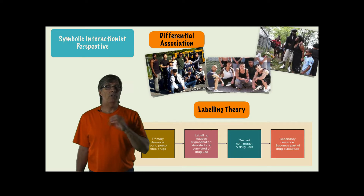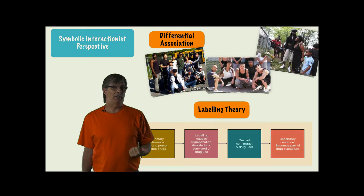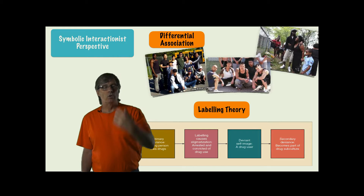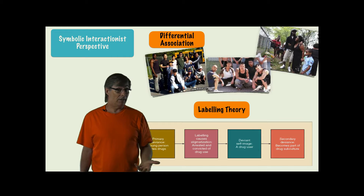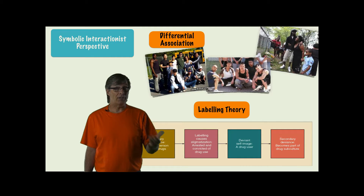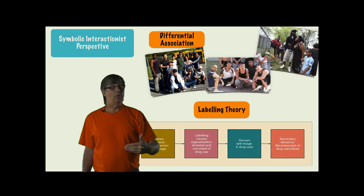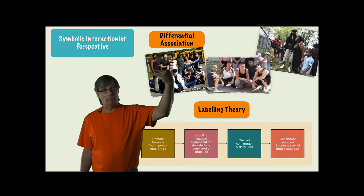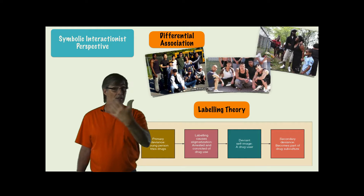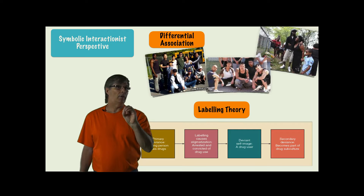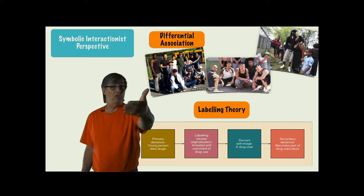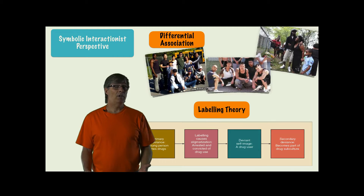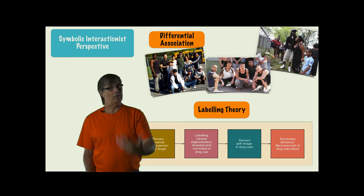Labeling involves two types of deviance. Primary deviance is the initial act of rule-breaking — your first offense or first instance of deviant activity. Secondary deviance occurs when a person who has been labeled as deviant accepts that new identity and continues the deviant behavior. If you learn from the first experience and don't repeat it, you're unlikely to be permanently labeled. But if you get back involved with the same people, continue similar behaviors, and identify with that group, that's secondary deviance.